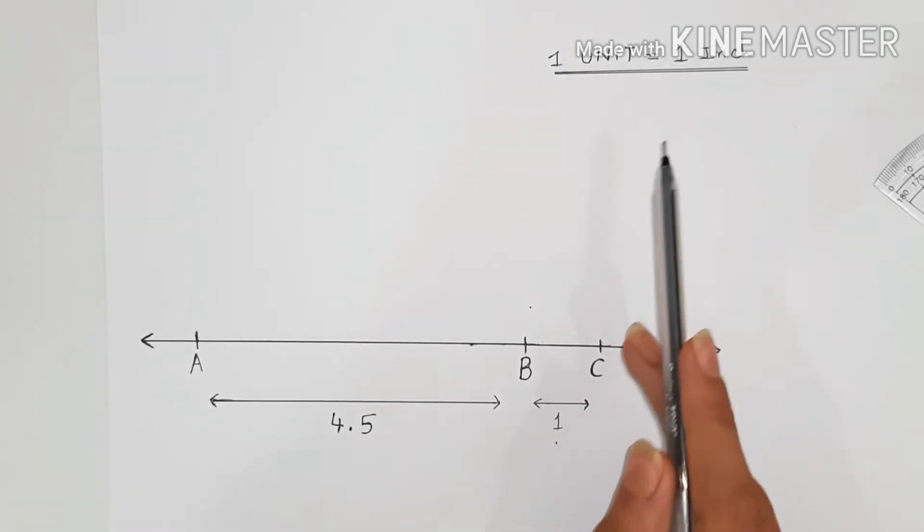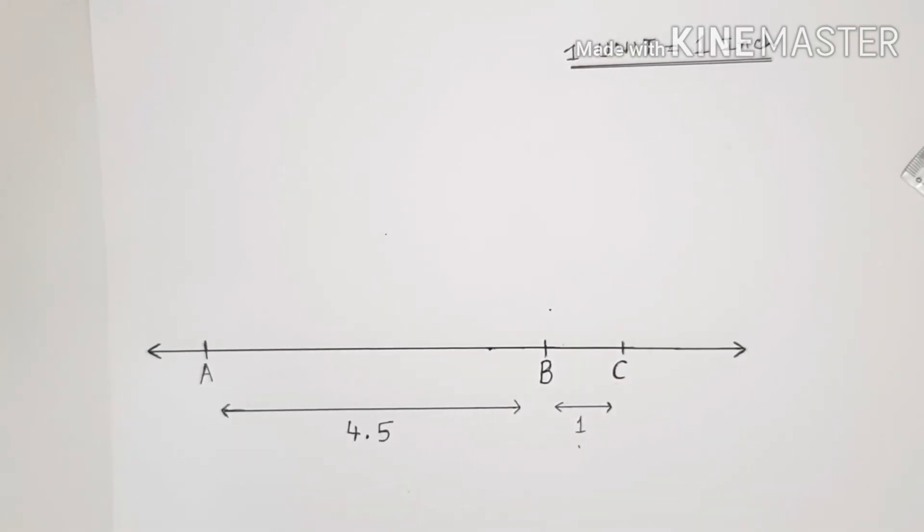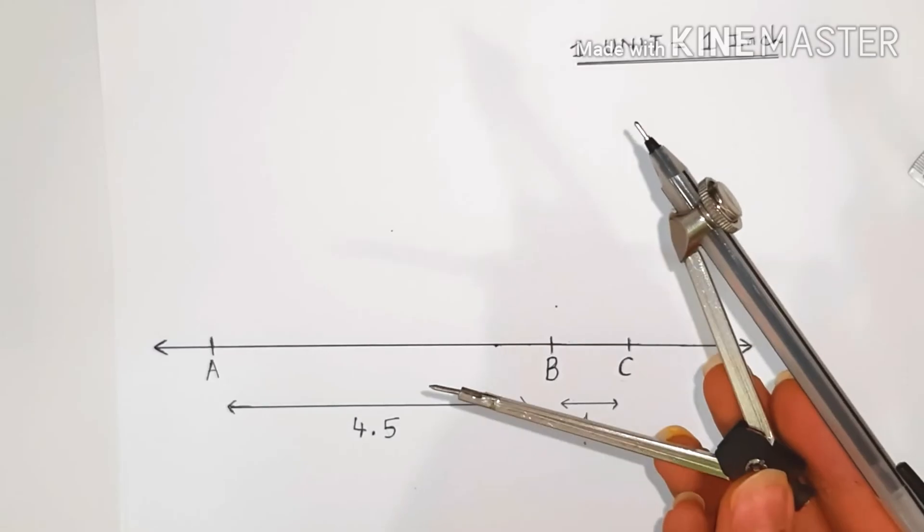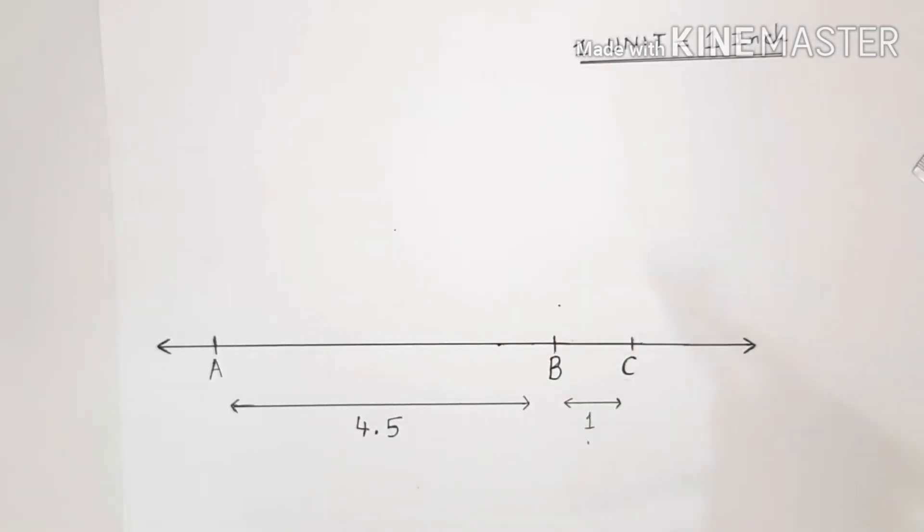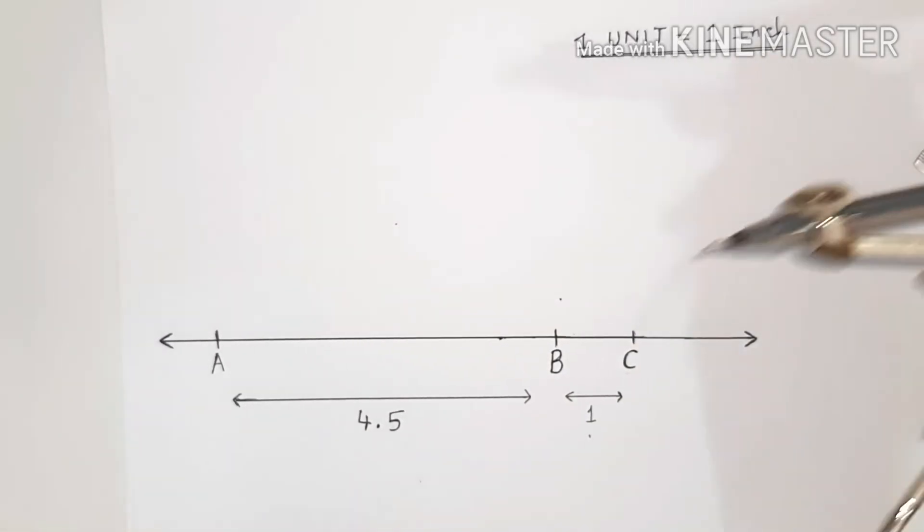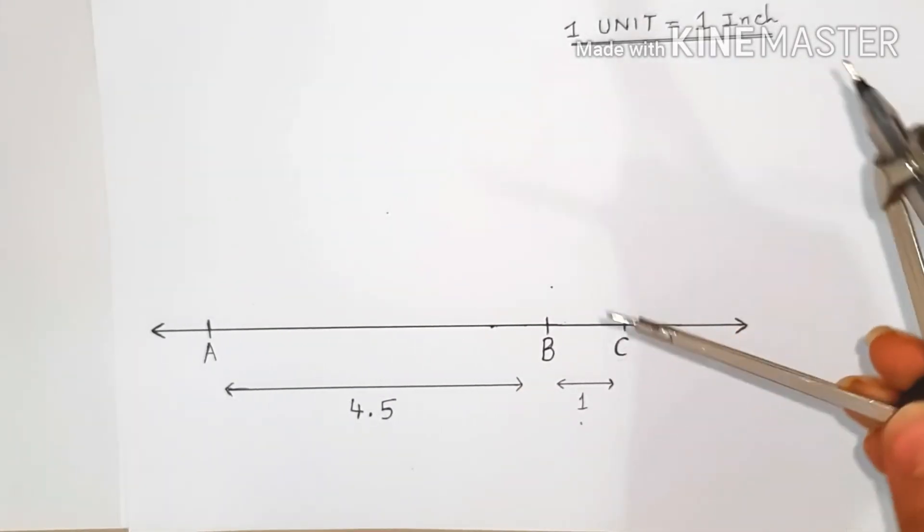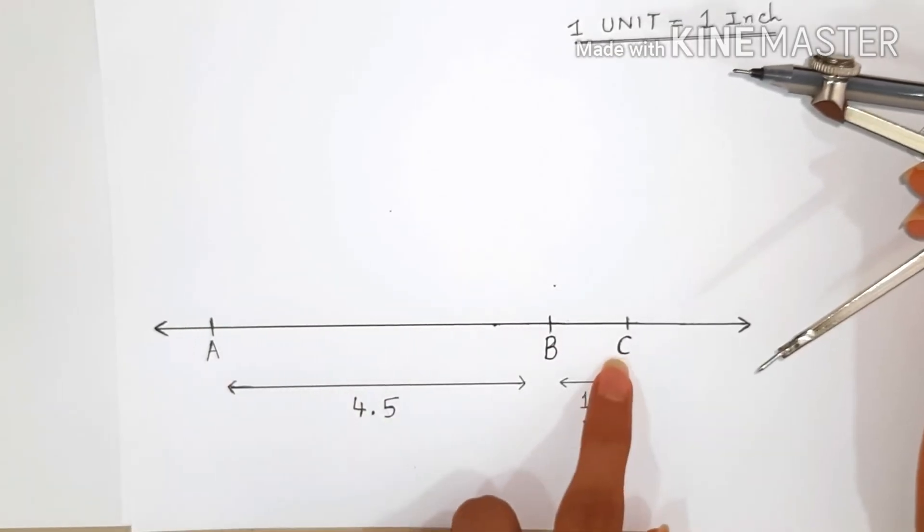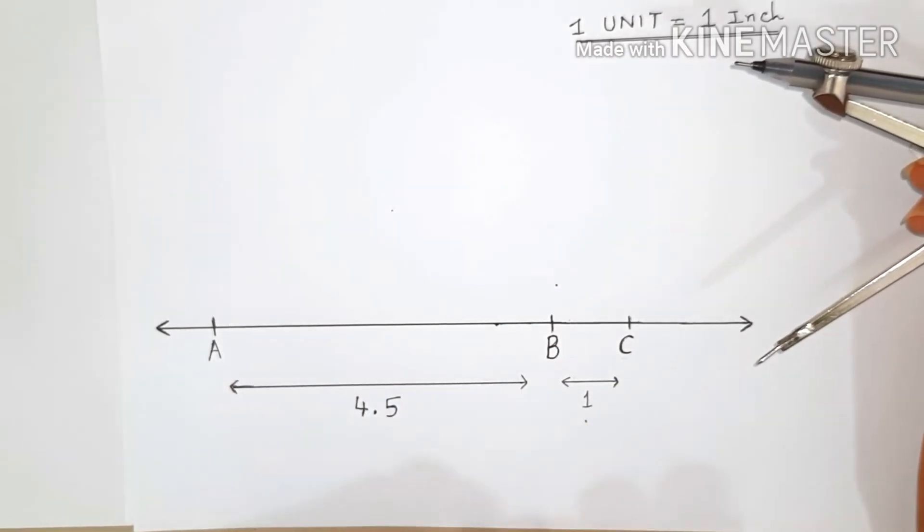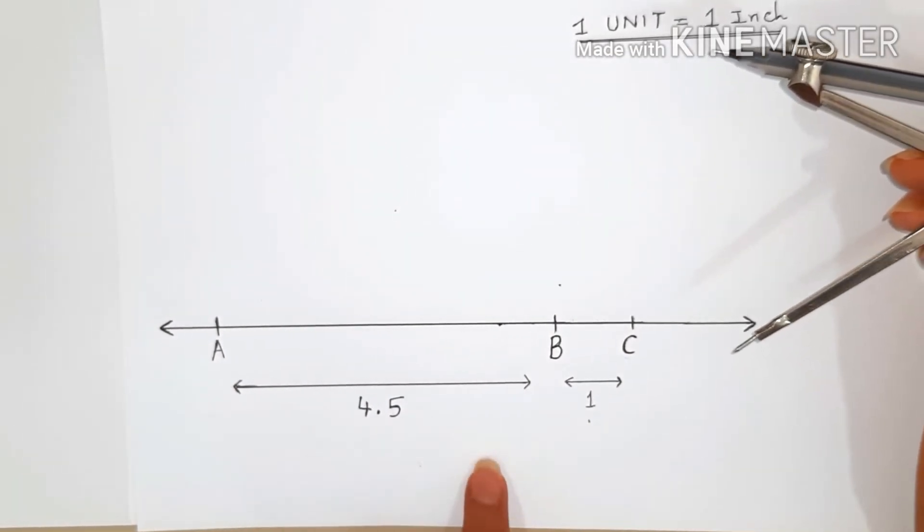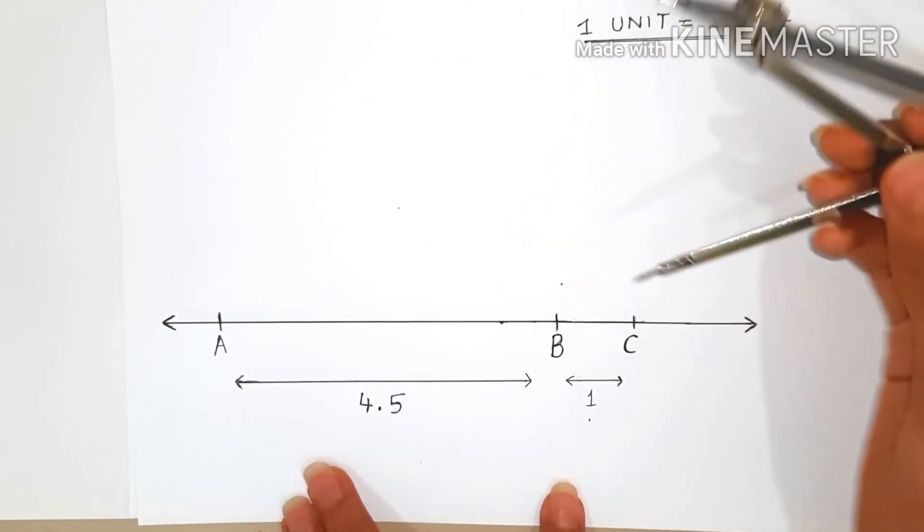We have taken one unit equals to one inch over here. Now we'll take our compass and the radius should be more than 3, because the distance from A to C is 5.5 and we need it more than half because we need to bisect A and C.